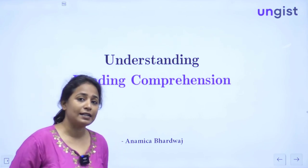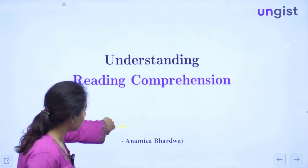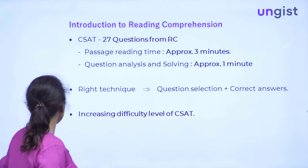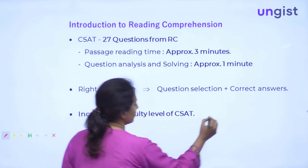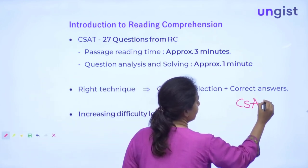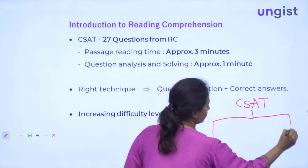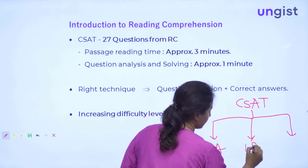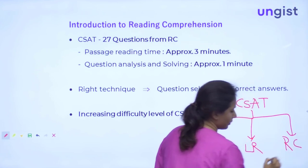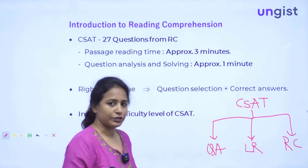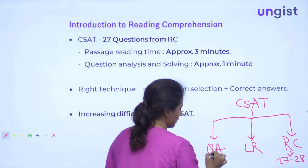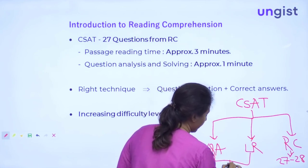Before we move ahead with understanding RC, let us understand it under the CSAT section. Under the CSAT section, as we know, we have 3 components: quantitative aptitude, logical reasoning, and reading comprehension. The reading comprehension section has around 27 to 28 questions, and the rest — around 52 to 53 questions — will be from the other sections.